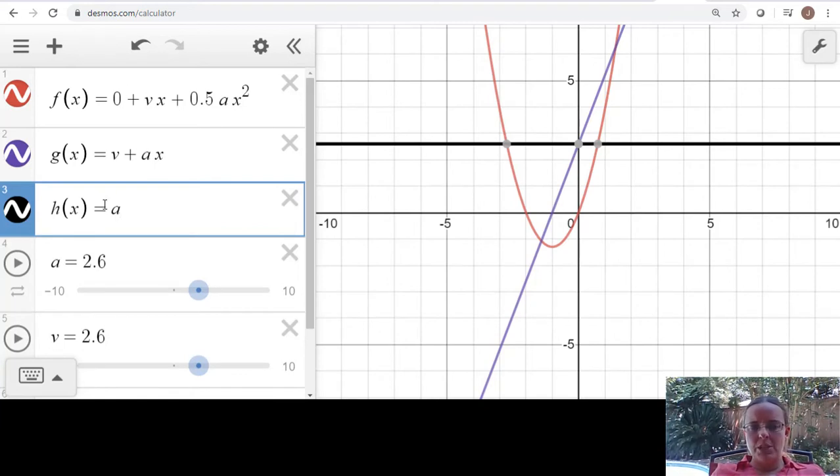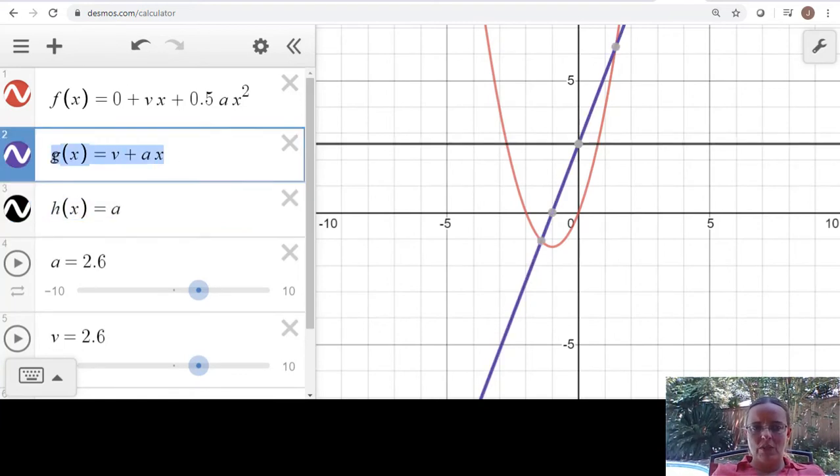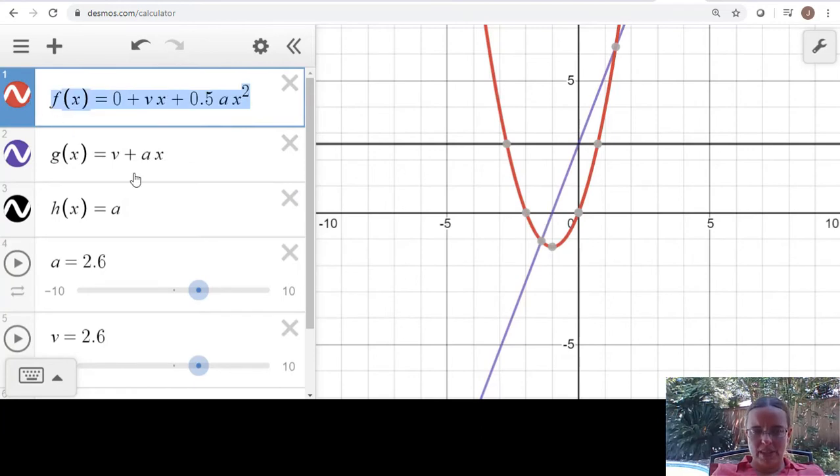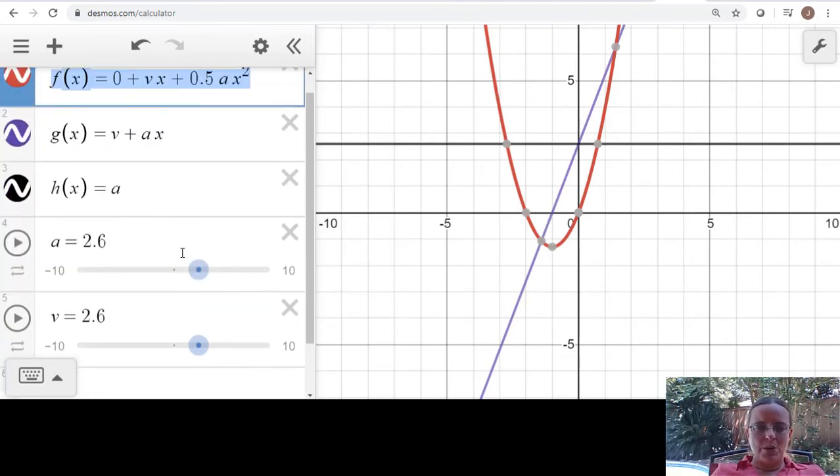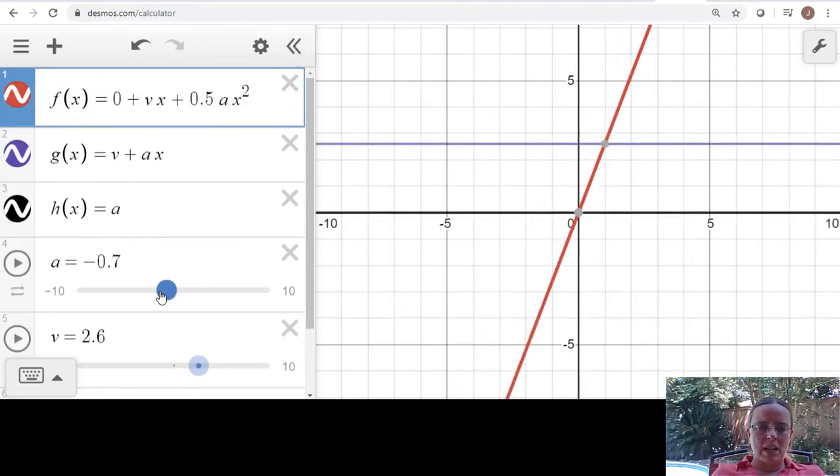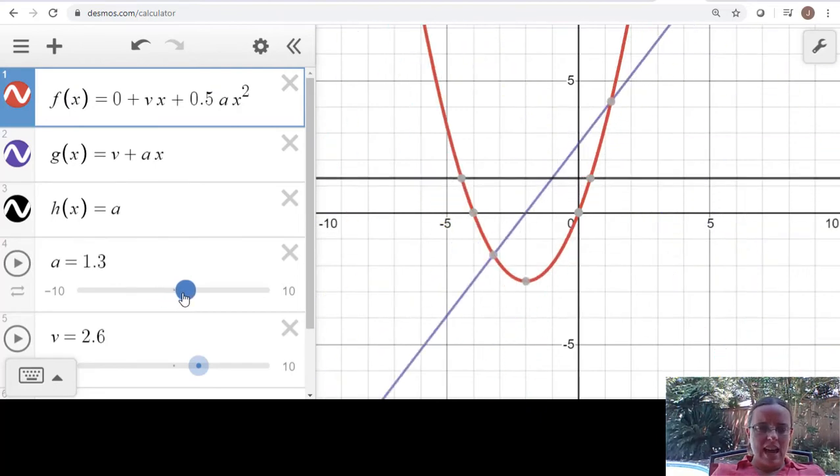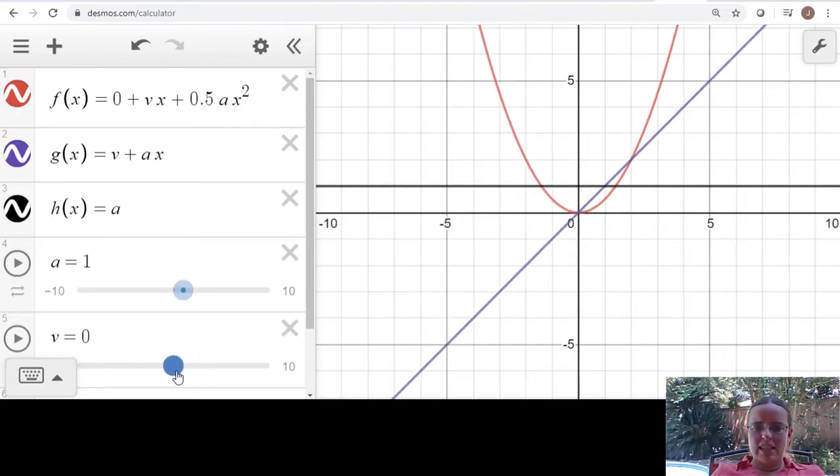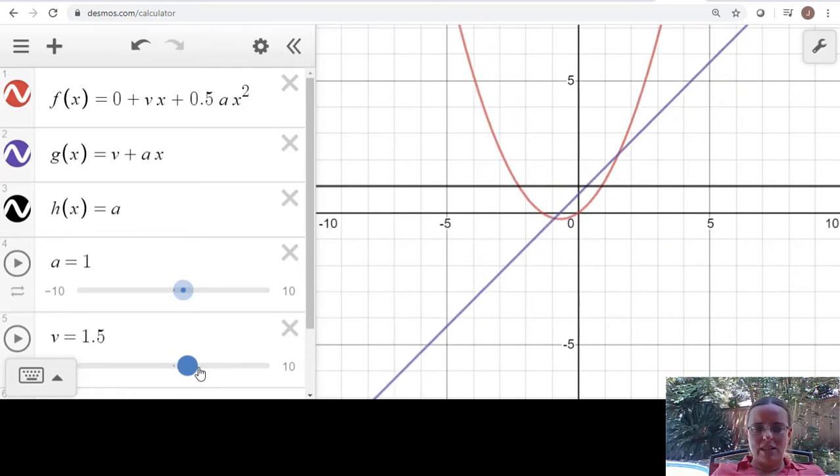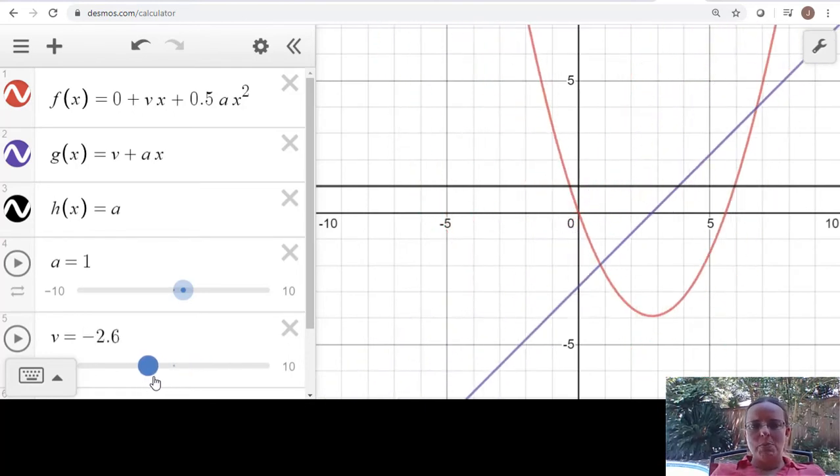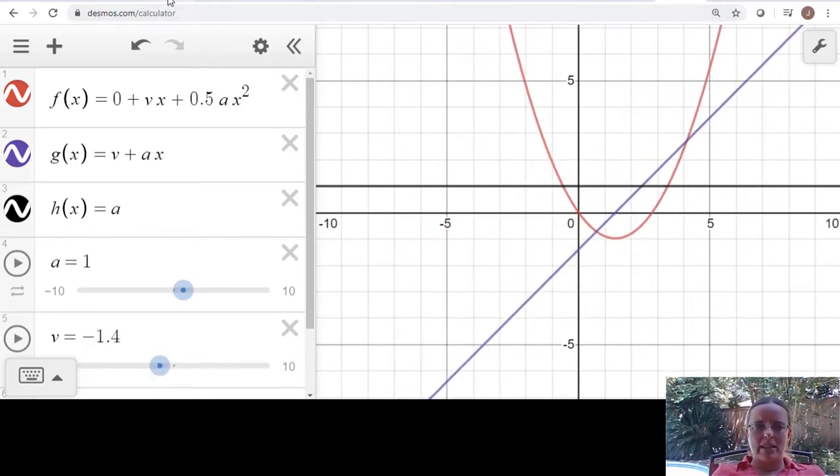So if you get these three equations in here - acceleration, velocity, position - then you can go through and very easily change what your acceleration is and what your starting velocity is, if you're starting with negative or positive velocity, and you can reproduce sections on that quiz.